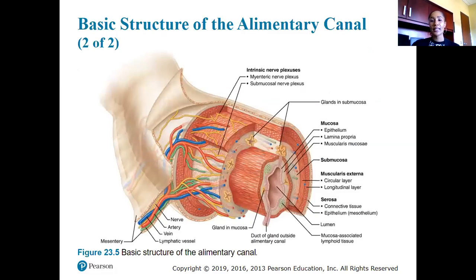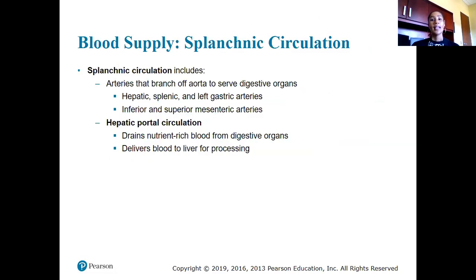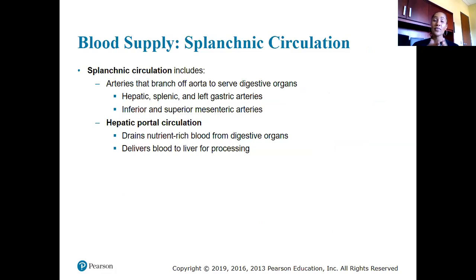What is the blood supply of the digestive system? We have the splanchnic circulation — arteries that branch off of the aorta and serve the digestive organs. These include the hepatic, splenic, and left gastric arteries, and the inferior and superior mesenteric arteries.